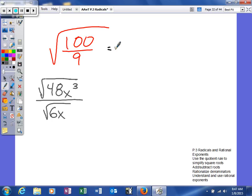So we're going to use the quotient rule, and we're going to say, well, since I have the square root of a fraction, I can really take the square root of the top over the square root of the bottom.